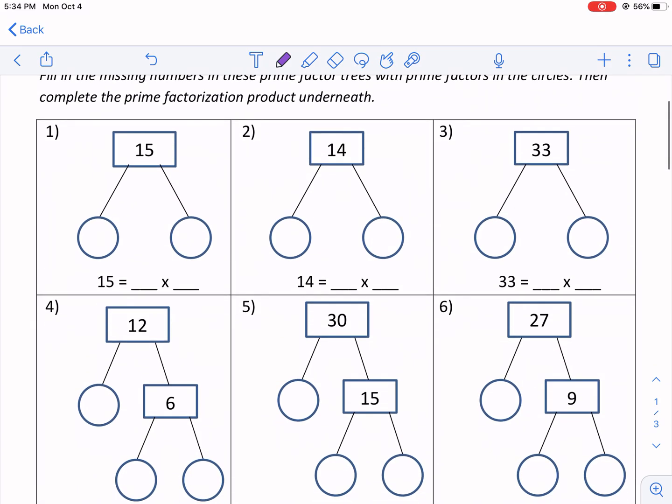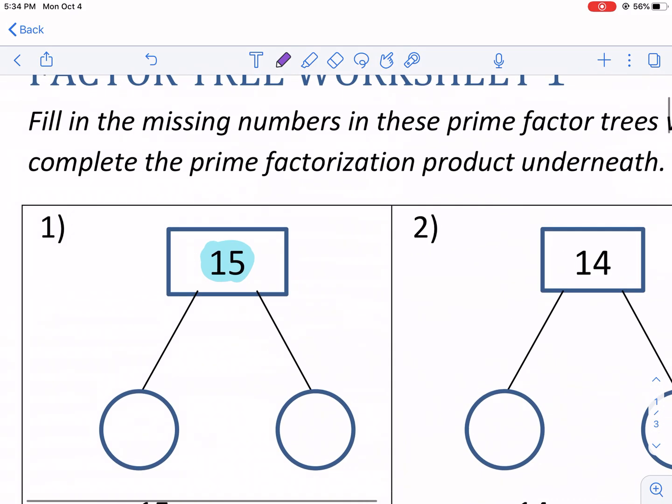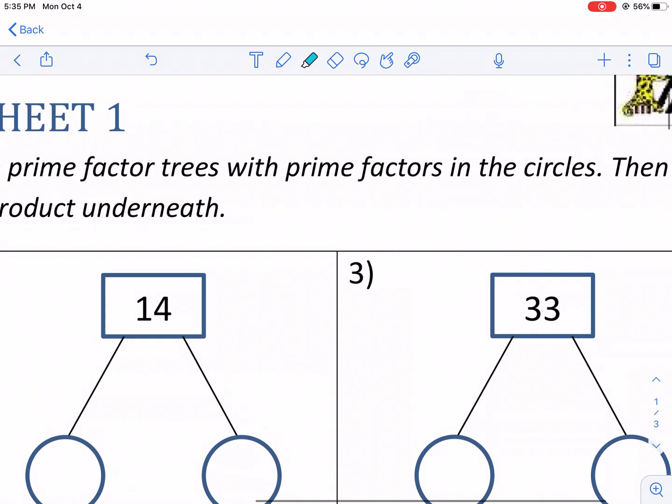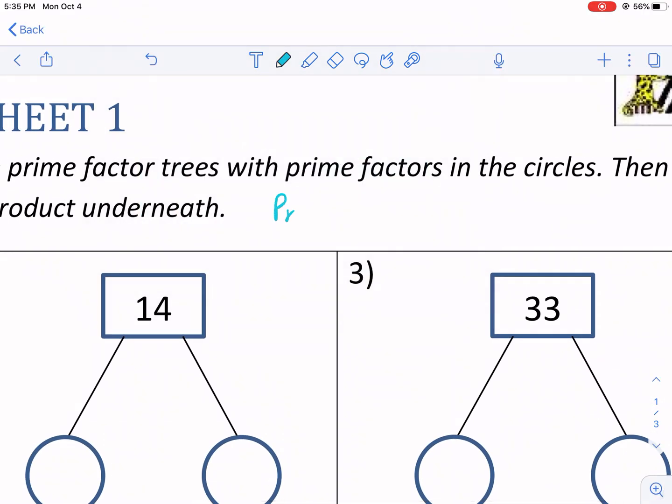But let's go ahead and jump right into what is prime factorization. Well, prime factorization is when we have a number, in this case, it's 15, and we're trying to break it down into its factors. But specifically, it's prime factors. Now, what does the word prime mean? Prime means that it only has factors of itself and one. So it's only going to have two factors, and it's going to be itself and one.